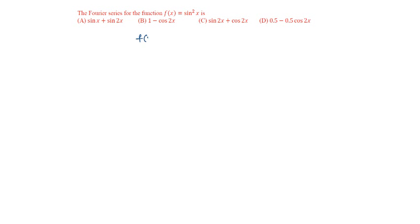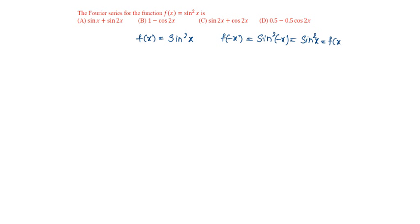The given function is f(x) = sin²x. f(-x) will be equal to sin²(-x), which equals sin²x, that is f(x). So the function is even, therefore bₙ will be 0.